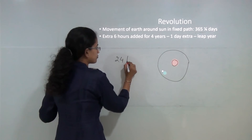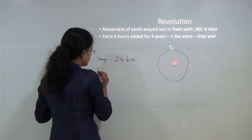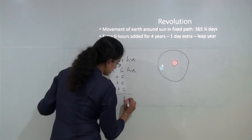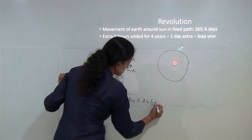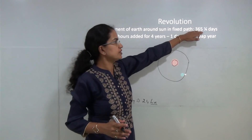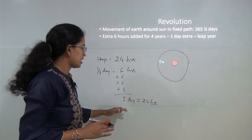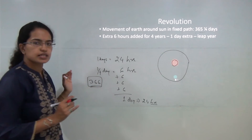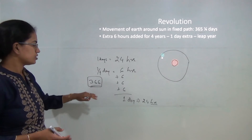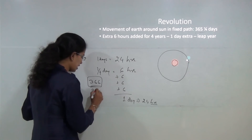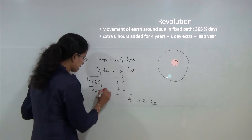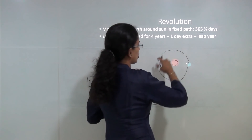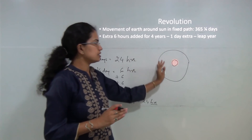In one day you have 24 hours, so in one-quarter day you have 6 hours. Adding 6 hours four times gives you 1 day, that is 24 hours. So for 3 years you have 365 days, and every 4th year you have a leap year where you increase the count by 1 day to get 366 days. To calculate a leap year, it should be divisible by 4, but if it is in thousands it should be divisible by 400. So a leap year has 366 days and a normal year has 365 days.